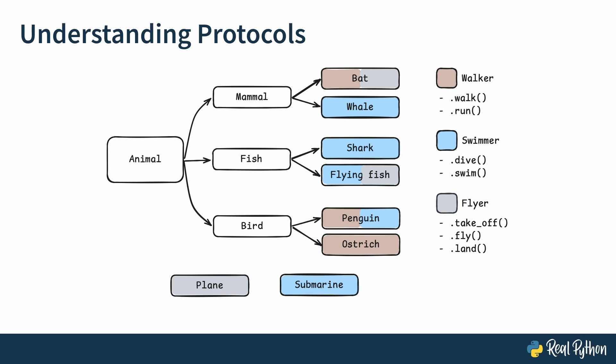And this is how protocols are related to duck typing. You might have heard, if it quacks like a duck and if it walks like a duck, it must be a duck. And this is exactly what we have here. When we think about whales and sharks and flying fish and penguins and submarines, what we say is, if it dives like a swimmer and if it swims like a swimmer, it must be a swimmer. It doesn't matter if it's an animal, a mammal, fish, bird, or if it's a submarine, something that is man-made. So this is the idea of protocols. It's to isolate useful behaviors from your class hierarchy. If you understand this, then you're good to go.